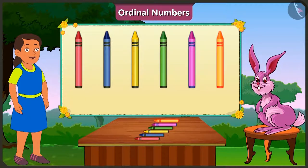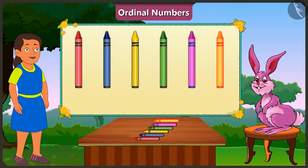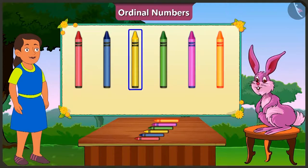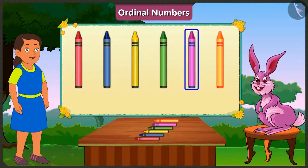Look here, the red crayon is at the first place. Blue crayon at the second place. Yellow crayon at the third place. Green crayon at the fourth place. At the fifth place is the pink crayon. And at the sixth place is the orange crayon.